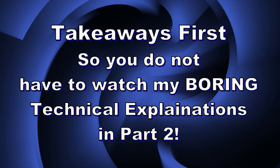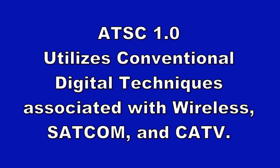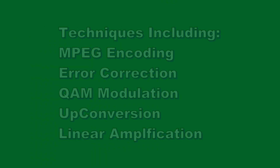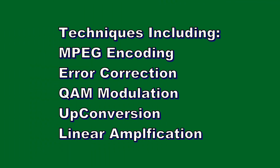I'm going to give you the takeaways first so you don't have to watch the boring technical explanations later. First, it's important to understand that ATSC 1.0 and 3.0 are both digital waveform standards — it's not like one is analog and one is digital; they're both true digital. ATSC 1.0 uses conventional digital techniques similar to those used in most wireless systems, SATCOM, and cable TV systems, including MPEG encoding, error correction, quadrature amplitude modulation, and other high-level modulations, upconversion, and linear amplification.